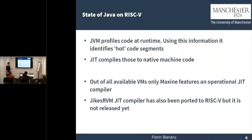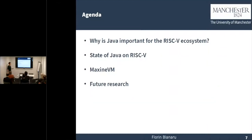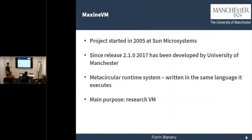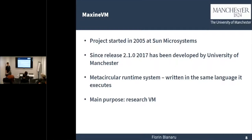There's also JxRVM which has the JIT compiler ported, but it's not released publicly yet. MaxineVM — a little bit of history: the project started in 2005 at Sun Microsystems. Then Sun Microsystems was bought by Oracle. In 2013, developers stopped working on the Maxine project, and in 2017 the project was reformed by the University of Manchester, and it's currently maintained by the University. MaxineVM is a metacircular runtime system, meaning the JVM is written in the same language it executes — in this case Java — and its main purpose is to be a research VM where developers and JVM scientists can implement ideas and see how they work.